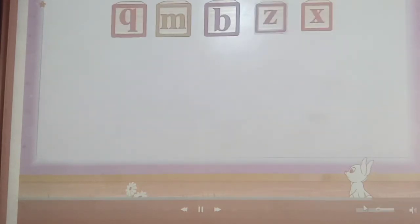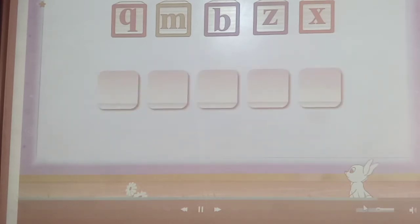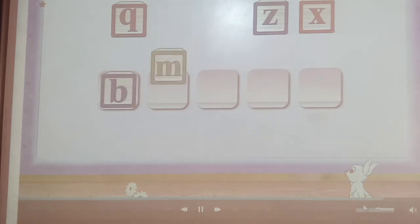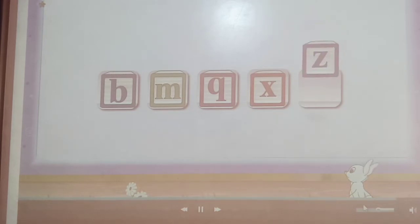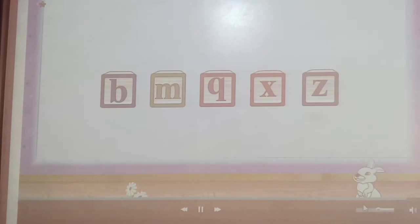Let us take the next set. The next set is in small letters. The first one is B. Then M, then Q. X comes after that. And Z is the last letter. See Rainbow, wasn't that easy. We have placed all the alphabets in the correct order.